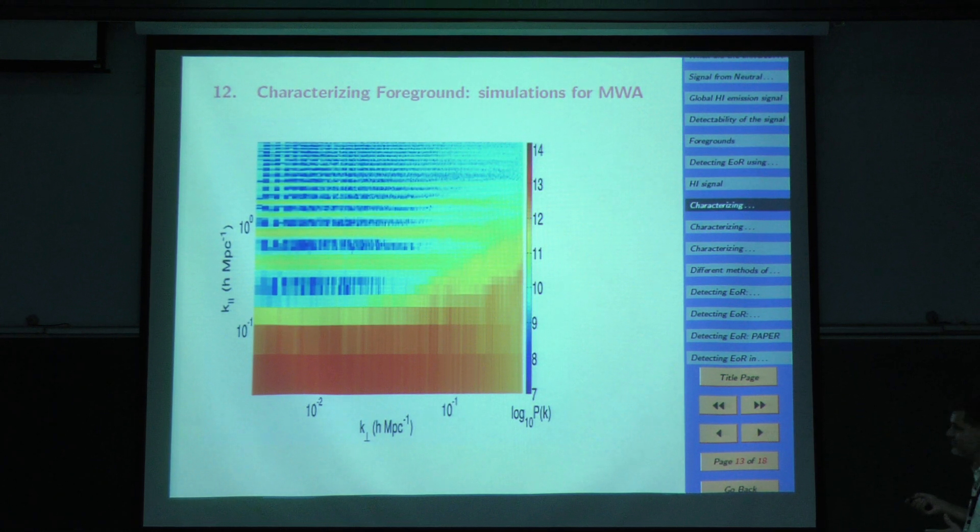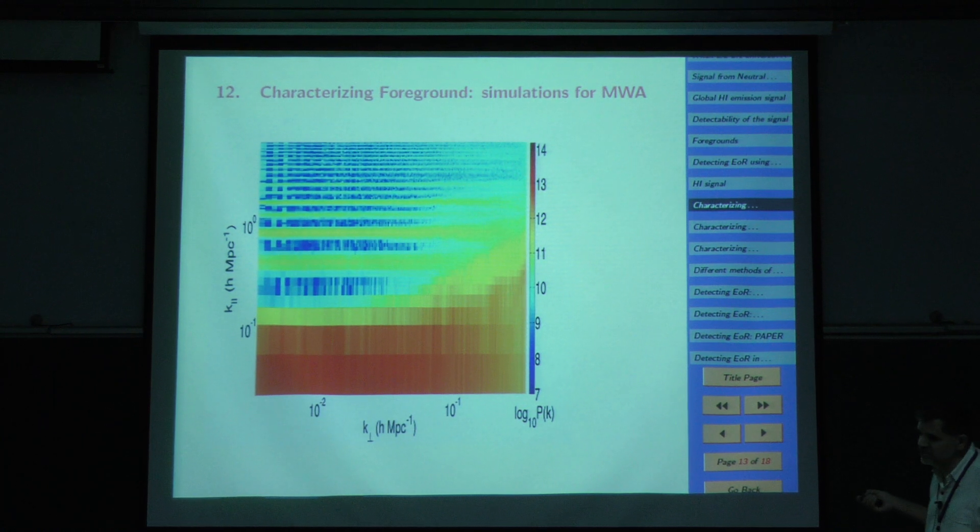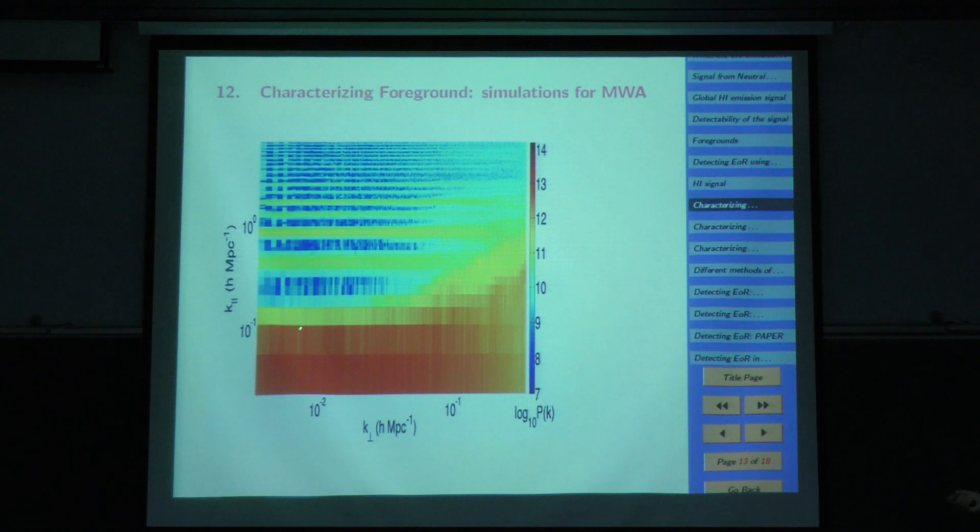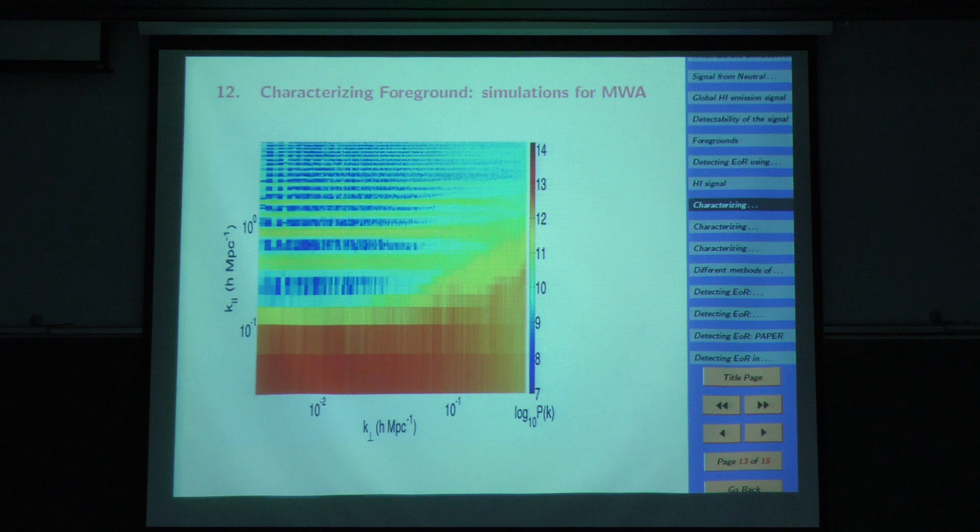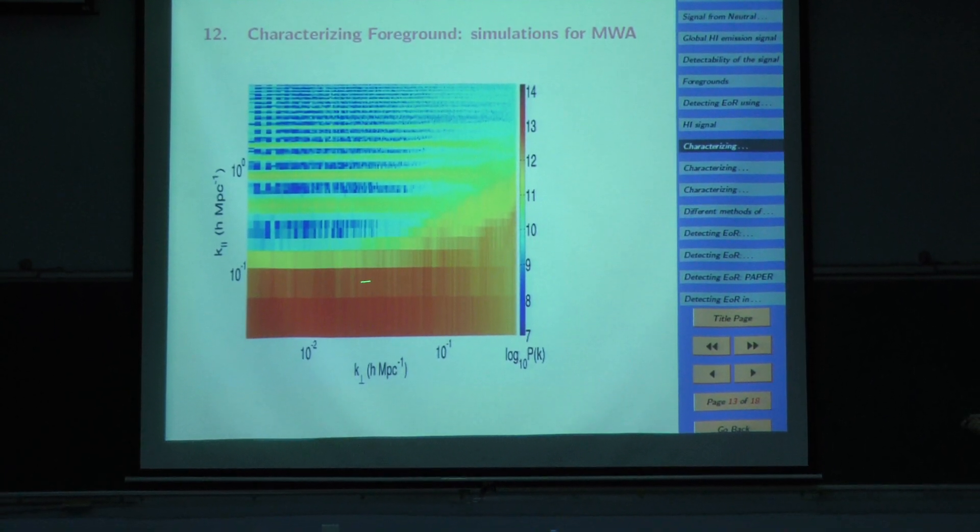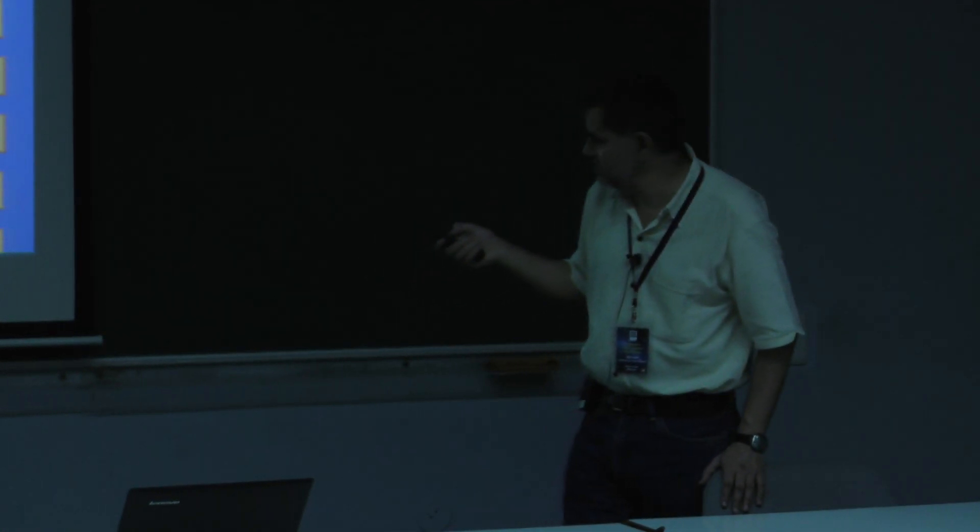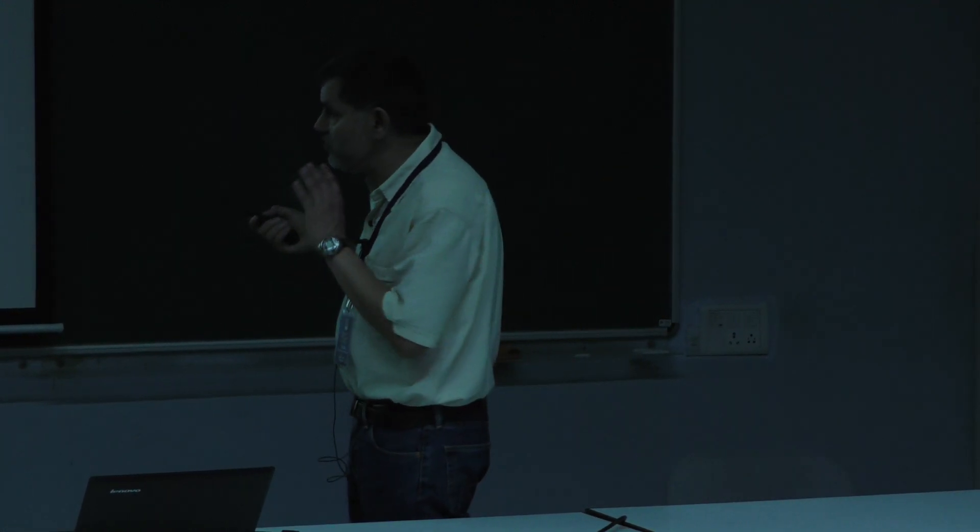Now let me show you something with all the complications put in with MWA. There are these horizontal bands which come from the fact that MWA has missing frequency channels. But you can clearly see a wedge structure here. I have put in noise now, more realistic noise, baselines of MWA. It looks like this. This is observational data. Data looks just the same as what I showed in simulation. This comes from the primary beam, this comes from the second node of primary beam.